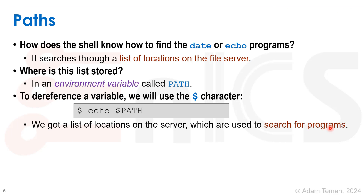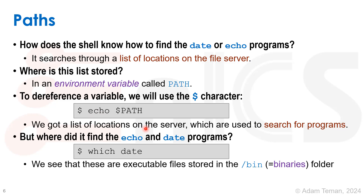How do we know where it found the program echo or date inside the list of locations in PATH? We can ask Linux using the command which. I write which date and it will run through the list of locations in the PATH variable and return whatever it found first. We see that it is stored in a folder called /bin. That's not surprising because bin is short for binaries — compiled binaries that run our programs are in a folder called bin. Slash is our root directory, so /bin is where basic programs like echo and which are stored.